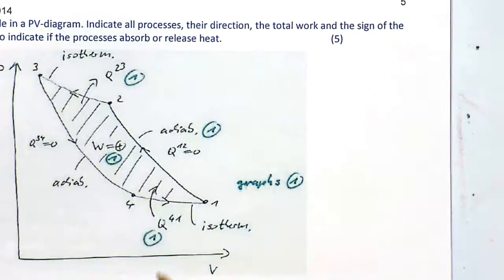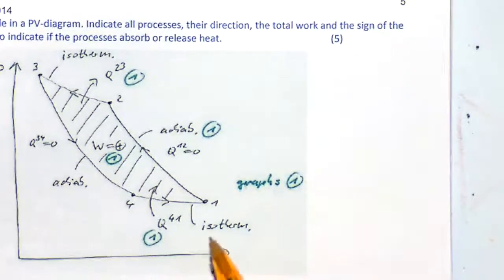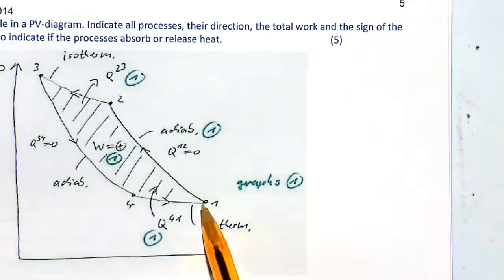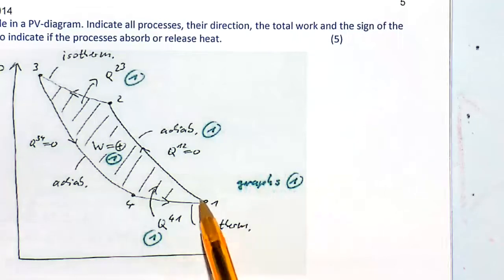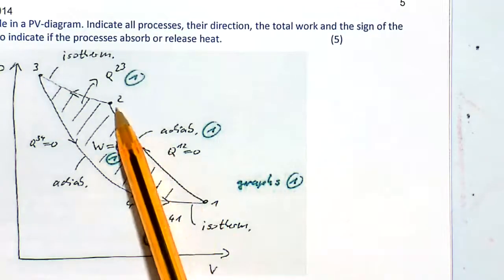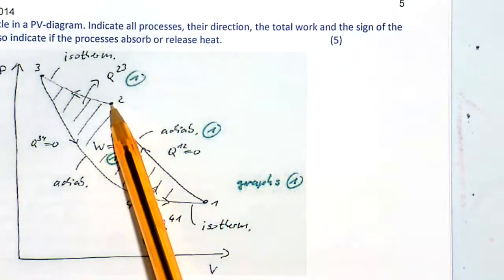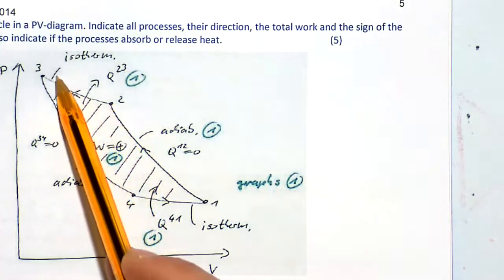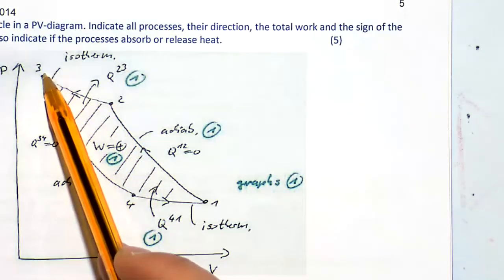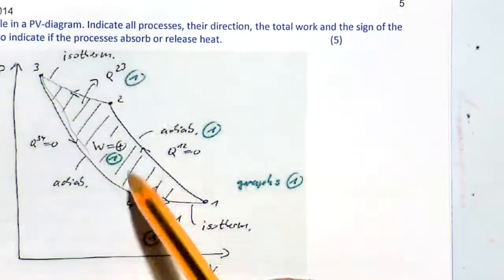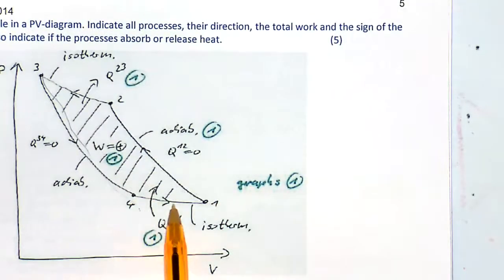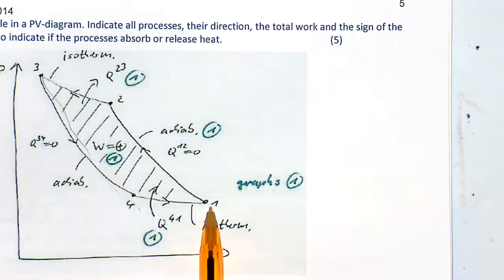So this is the PV diagram you're looking for. You're compressing adiabatically from your initial volume to your new pressure. Then it's isothermal. Then you are releasing the pressure adiabatically and it goes back to your initial stage as your volume increases. So it's the full cycle.